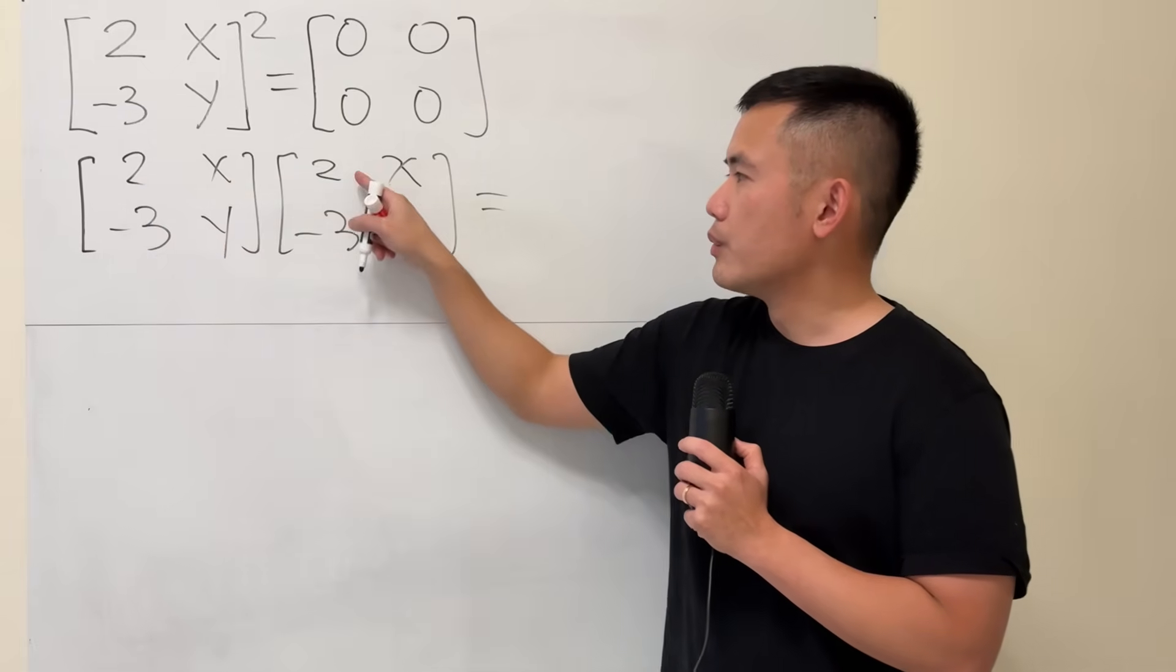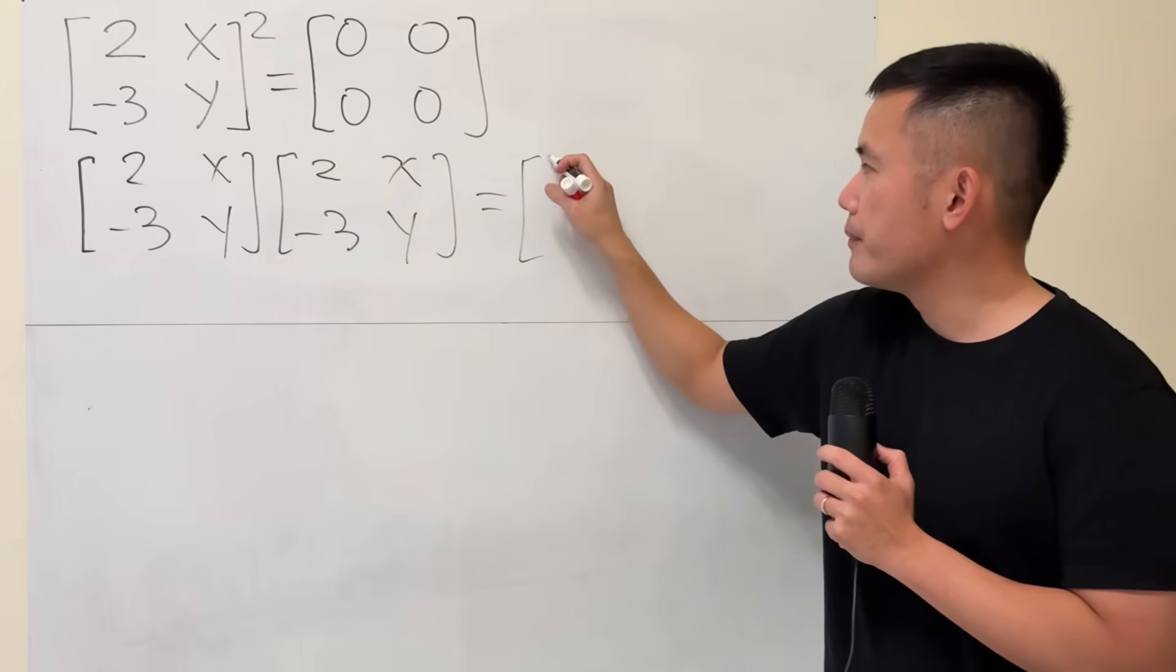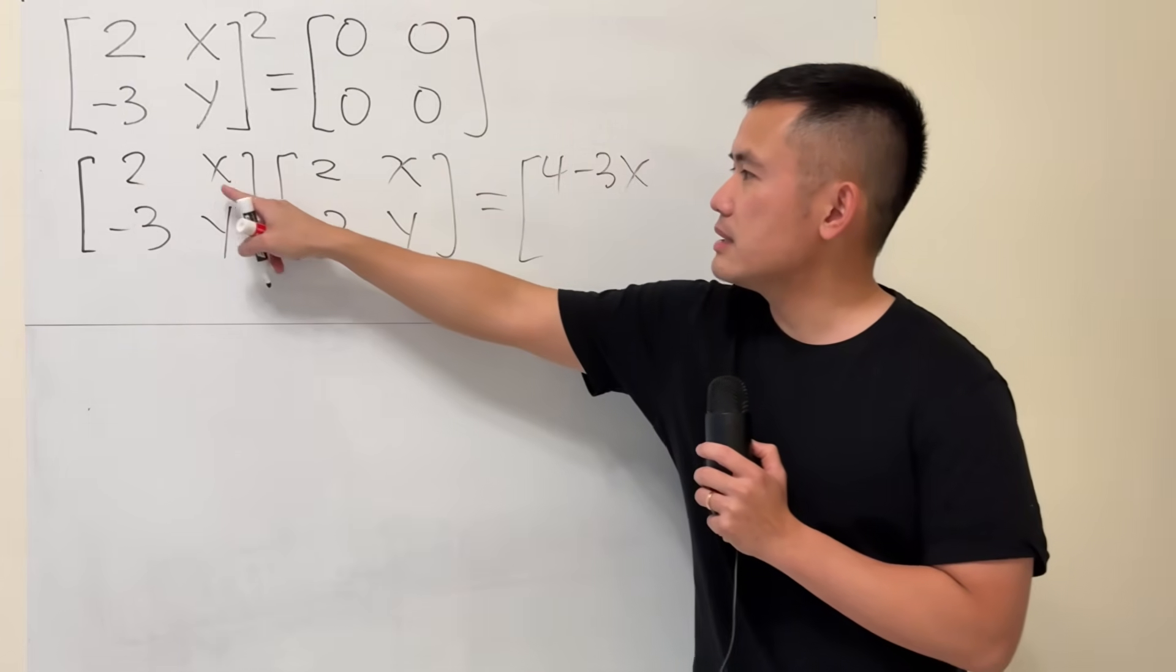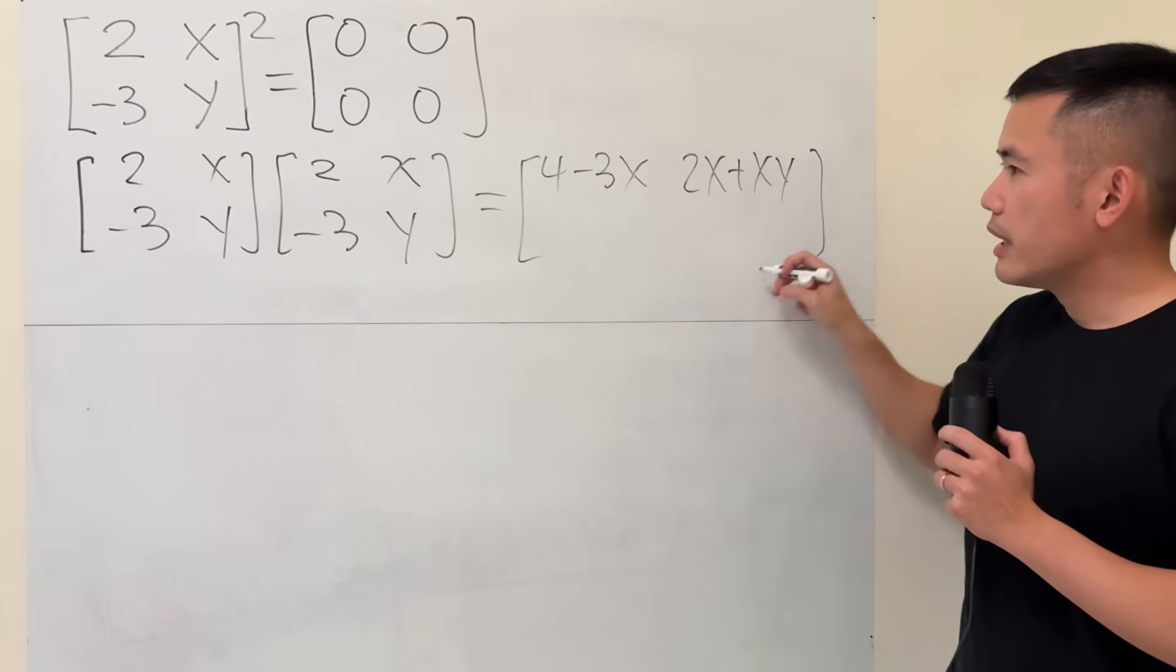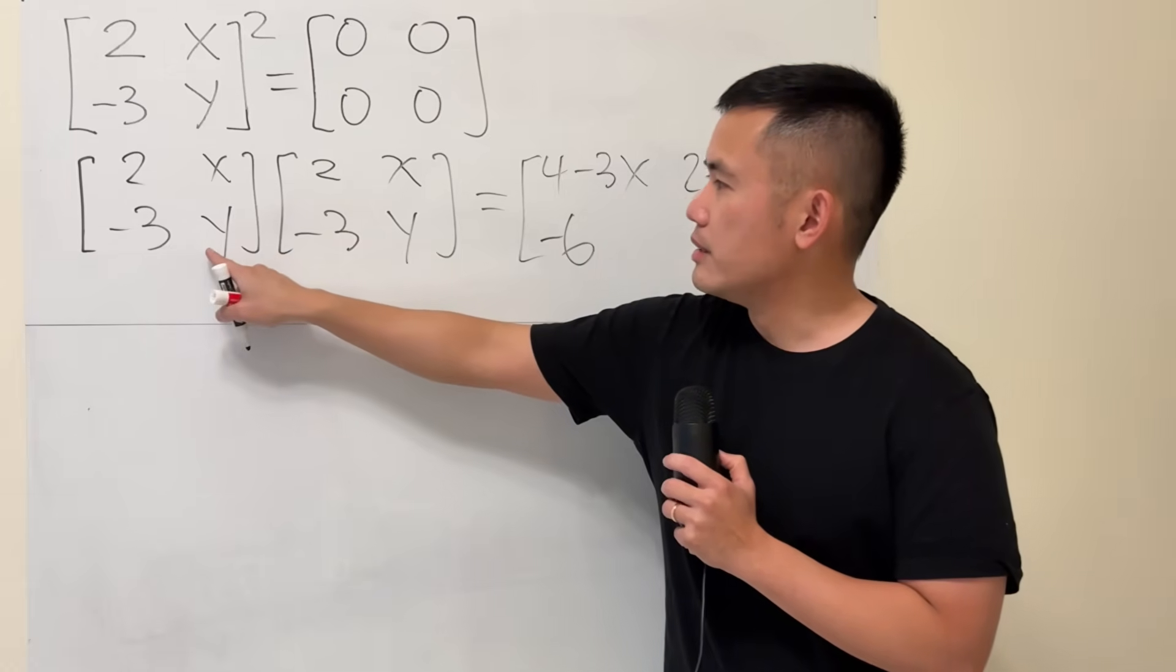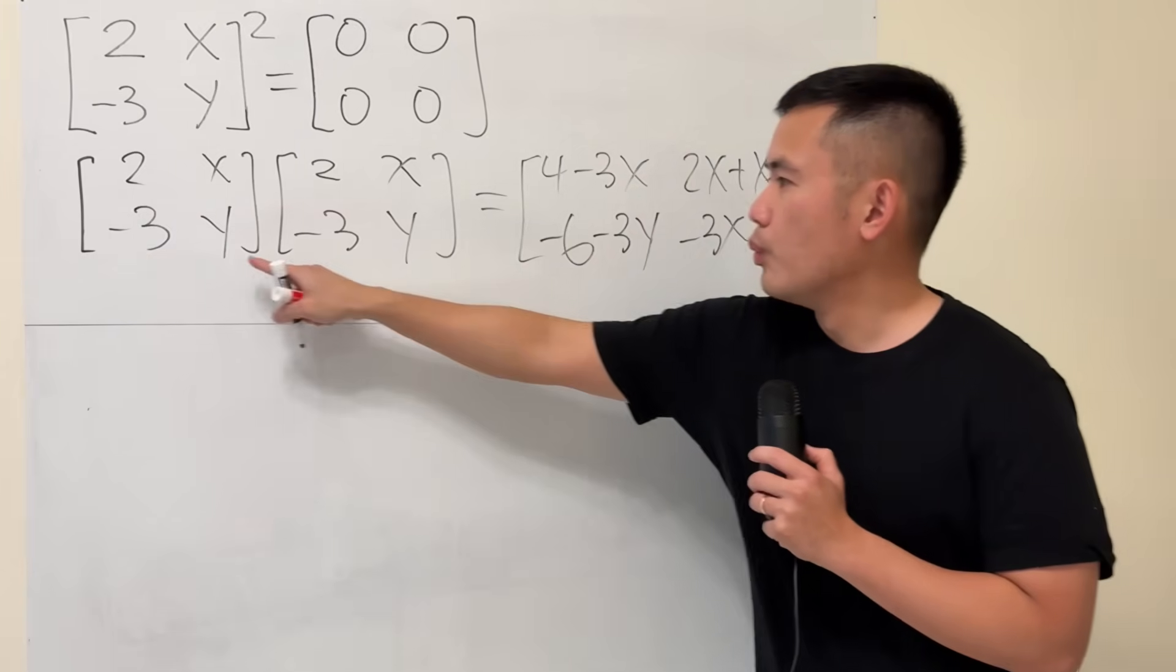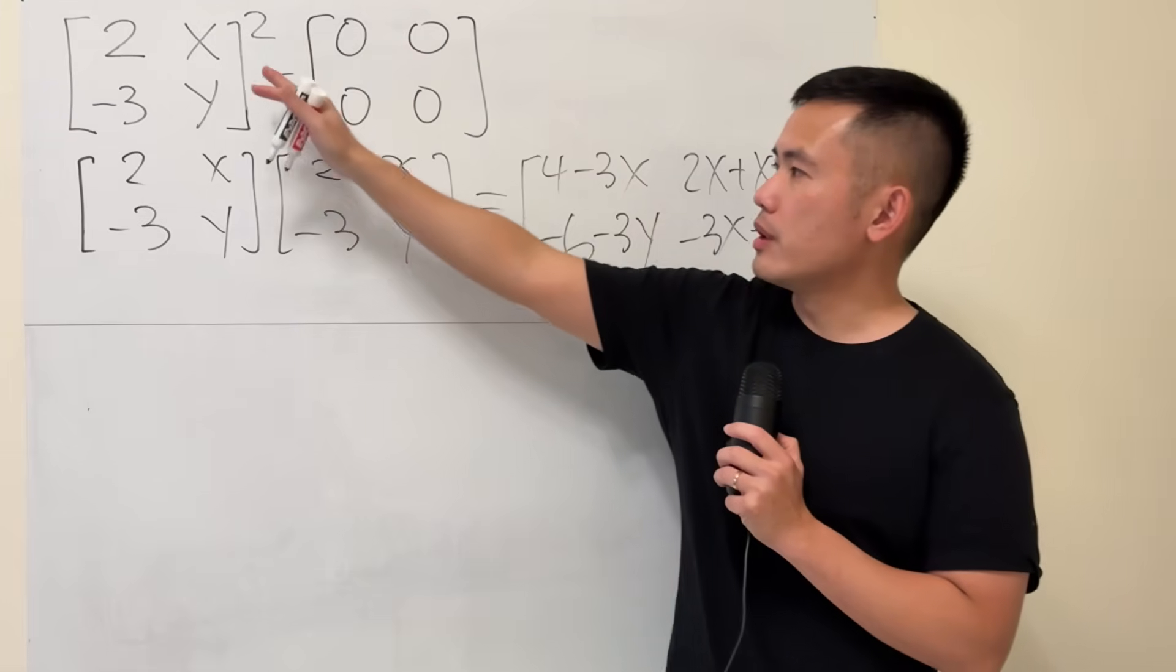So, firstly, we will have 2 times 2, which is 4, and then we do x times negative 3, which is negative 3x. And then just continue. 2 times x plus x times y. And then negative 3 times 2, which is negative 6. And then y times negative 3, so minus 3y. And then lastly, negative 3 times x. And then y times y, so that's plus y squared. So, this is what happens when we square this matrix.